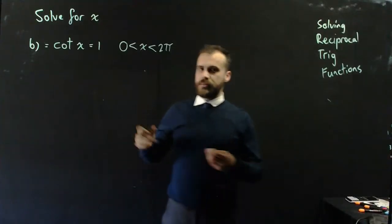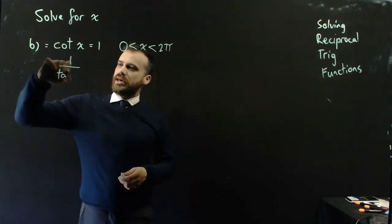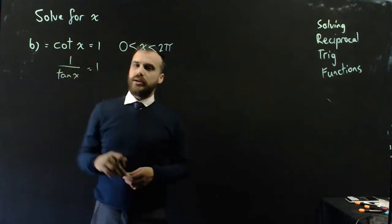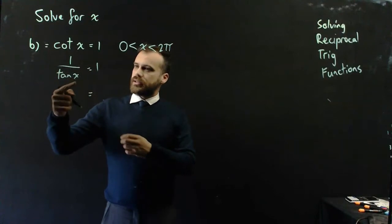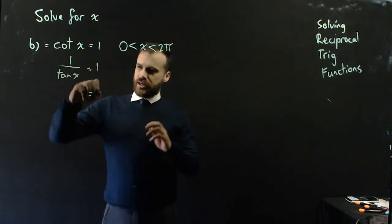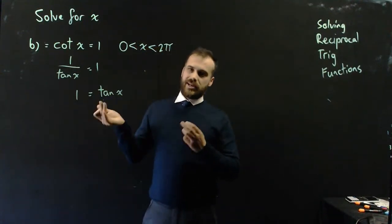Since we've only been going for a minute, may as well do another one. cot x equals 1. That's the same as 1 on tan x equals 1, because that's the reciprocal cot. Now, we can say that tan x, we multiply both sides by tan x, tan x will come up here. And now we can say that tan x equals 1.